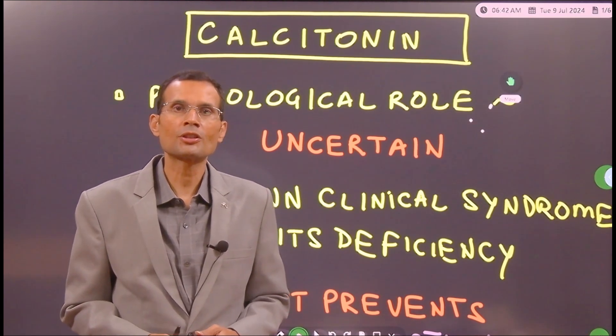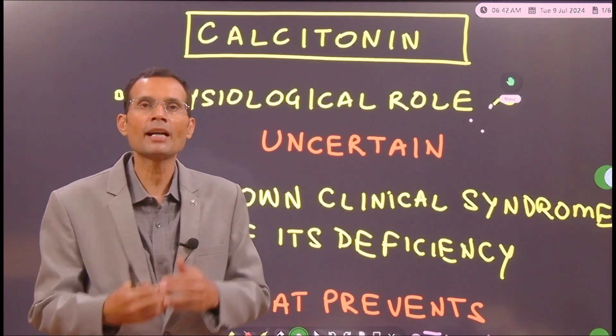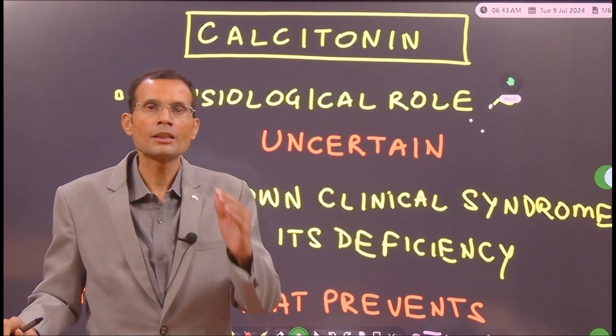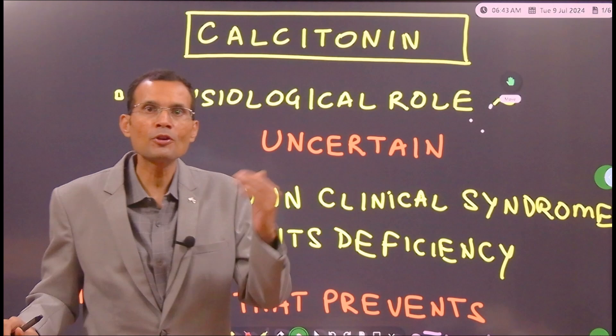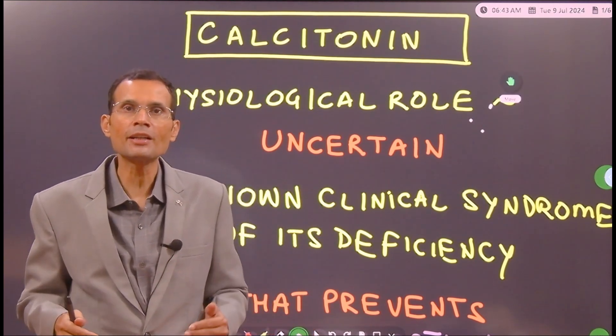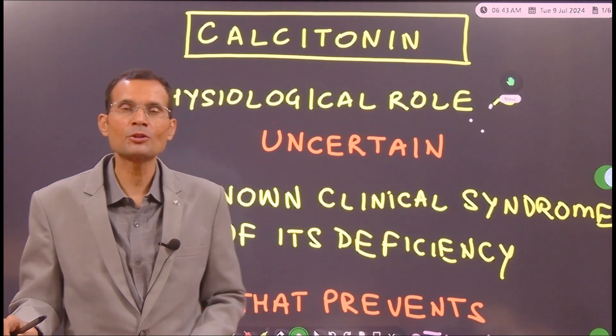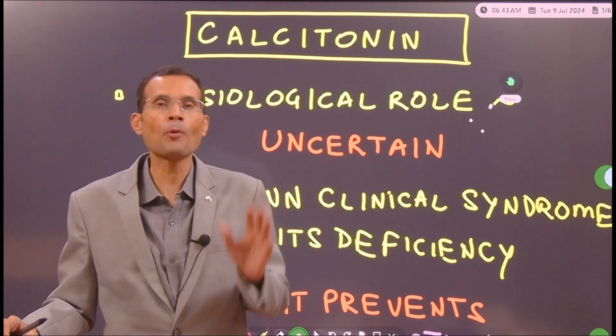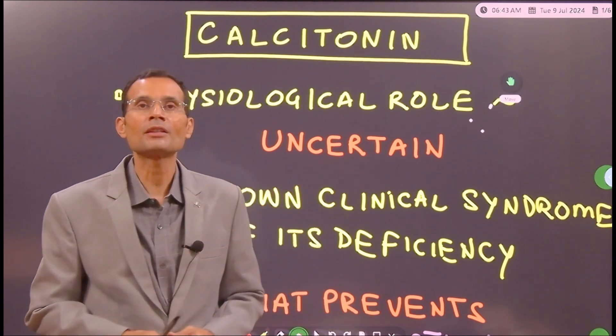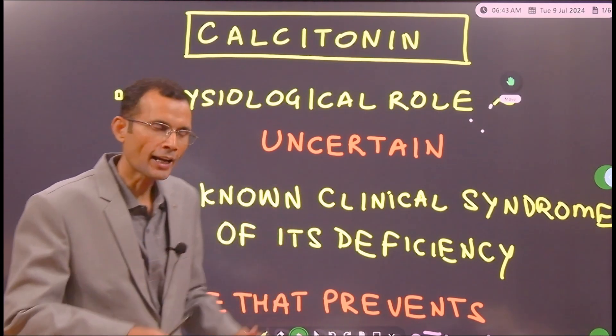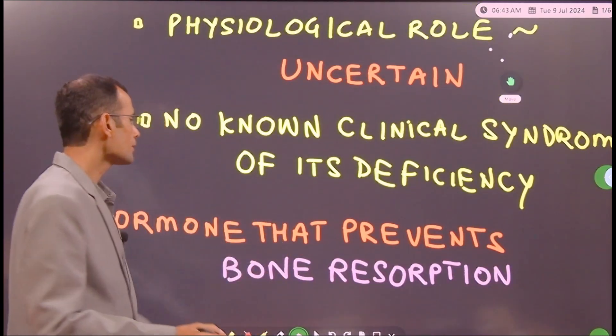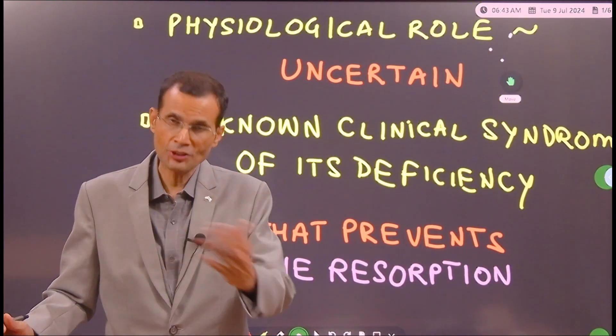And then during lactational period also, milk synthesis will require calcium. From where will this calcium be derived? Again from the mother's body. Therefore, the mother is likely to be deprived of calcium or her resources are going to be depleted. And this is where calcitonin is likely to play a very important role - it prevents bone resorption in the mother. So yes, it has an important role to play at some places.